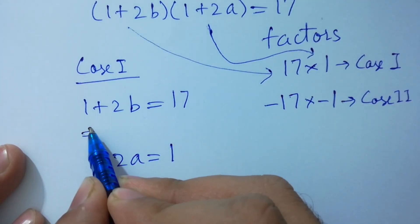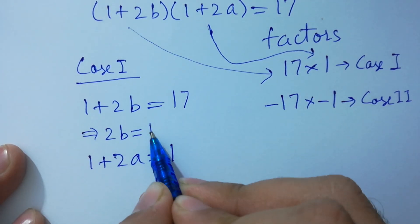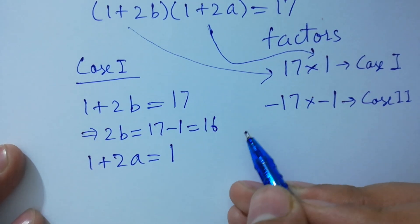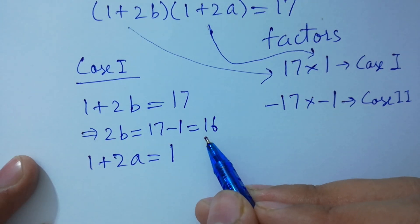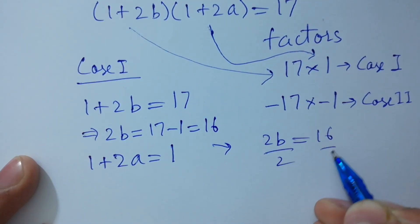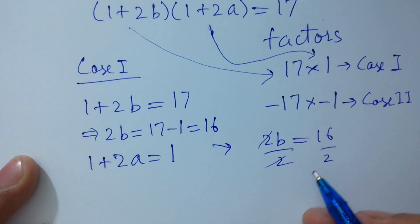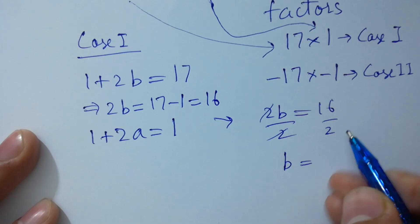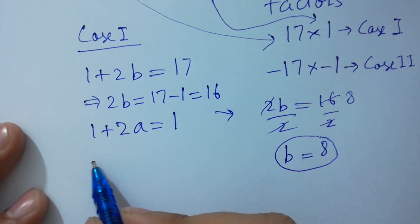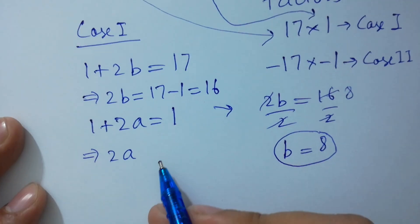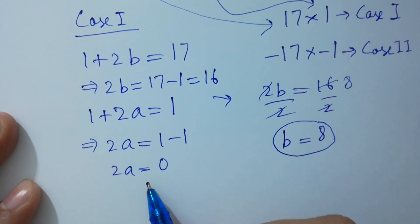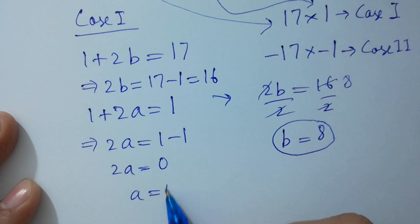Solving: 2√b equals 17 minus 1, which is 16. Dividing both sides by 2, the 2s cancel and we get √b equals 8, so b equals 64. For the other equation, 2√a equals 1 minus 1, giving 2√a equals 0, so a equals 0.